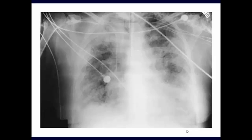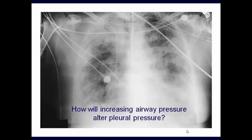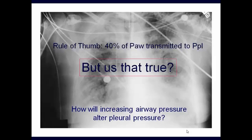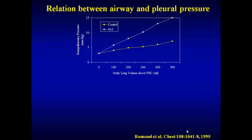One of the problems is: if you have a patient with an endotracheal tube and diffuse interstitial infiltrates — for example, ARDS — how much is the airway pressure going to alter pleural pressure? Because it's the pleural pressure — the intrathoracic pressure — that you care about. There was a rule of thumb saying 40% of airway pressure is transmitted to the pleural space. Back when I was a fellow, that's what everybody said. But was that true?